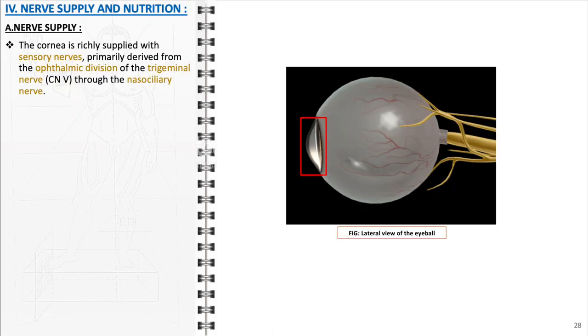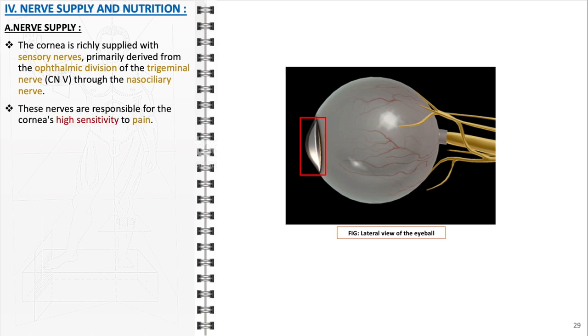After exploring the different anatomical characteristics of the cornea, let's now delve into the nerve and nutritional supply. Concerning the sensory nerve supply of the cornea, it is primarily derived from the ophthalmic division of the trigeminal nerve through the nasociliary nerve. These nerves are responsible for the cornea's high sensitivity to pain. Although the cornea does not have thermal receptors, it is sensitive to mechanical and chemical stimuli, which can also induce pain.